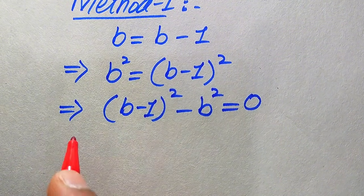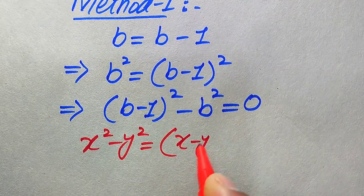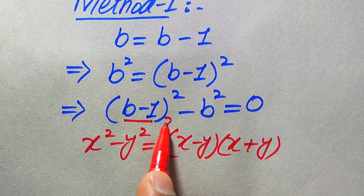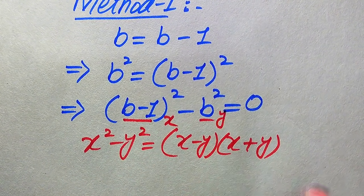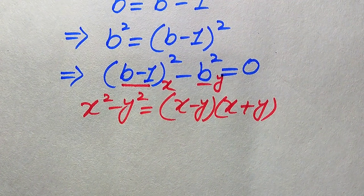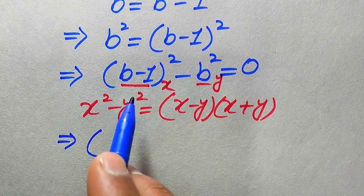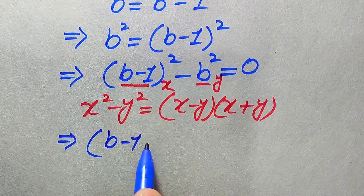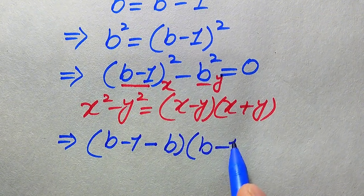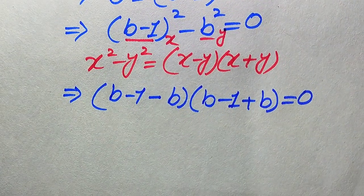We apply the algebraic formula x squared minus y squared equals (x minus y)(x plus y). Here x is (b minus 1) and y is b. Applying this formula, the equation becomes: (b minus 1 minus b) times (b minus 1 plus b) equals zero.